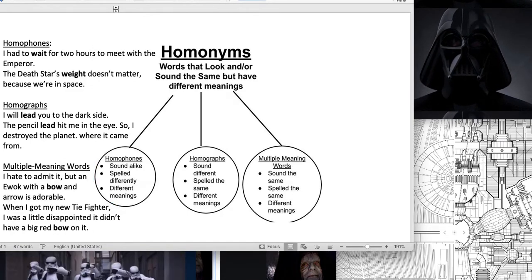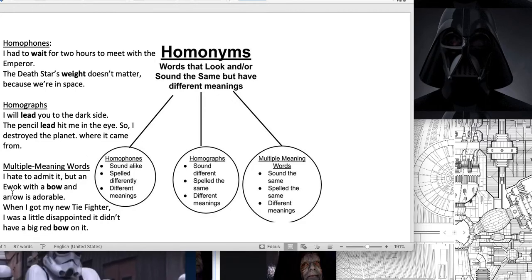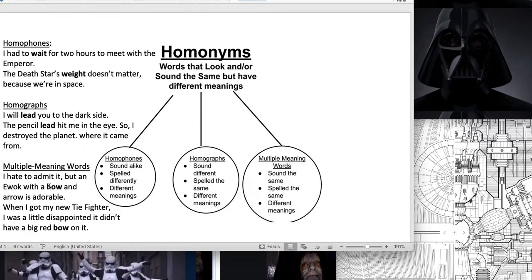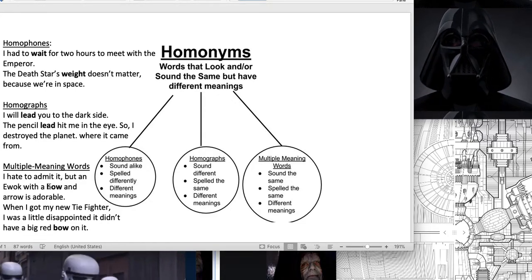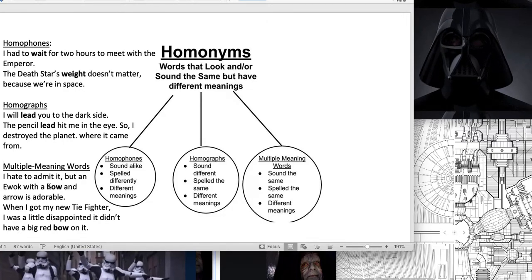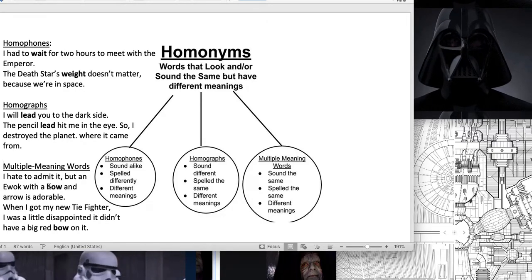That would be, I hate to admit it, but an Ewok with a bow and arrow is adorable. And when I got my new TIE fighter, I was a little disappointed it didn't have a big red bow on it.